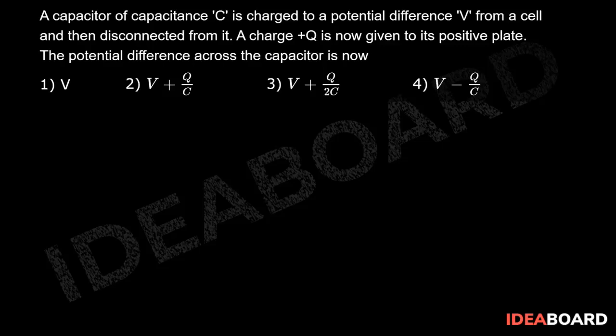A capacitor of capacitance C is charged to a potential difference V from a cell and then disconnected from it. A charge Q is now given to the positive plate, the potential difference across the capacitor now.